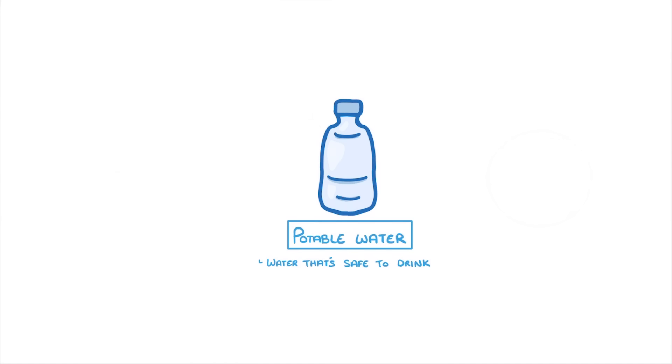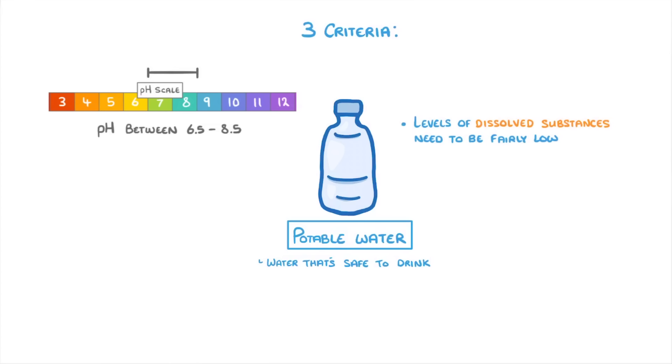This by itself isn't a problem, but there are three criteria for water to meet before it can be potable. One is that the levels of dissolved substances need to be fairly low. Another is that it has to have a pH of between 6.5 and 8.5 so that it's not too acidic or alkaline. And lastly we have to make sure that there are no microorganisms like bacteria or fungi swimming around in it.